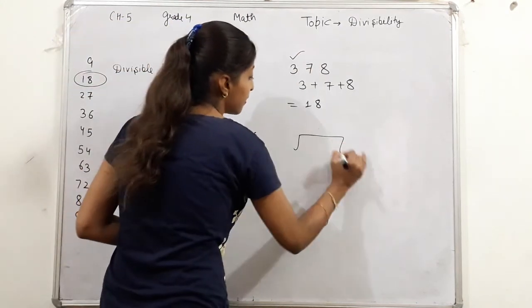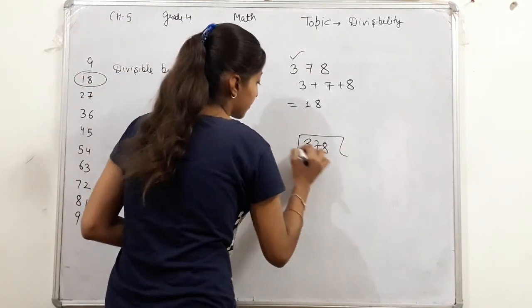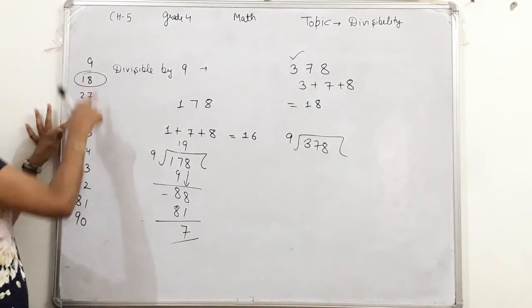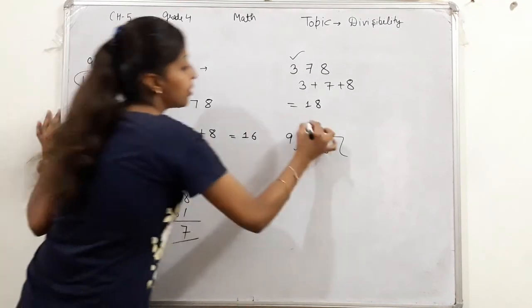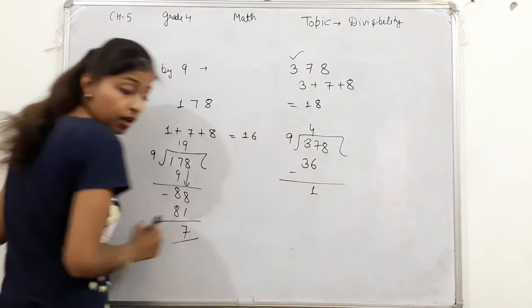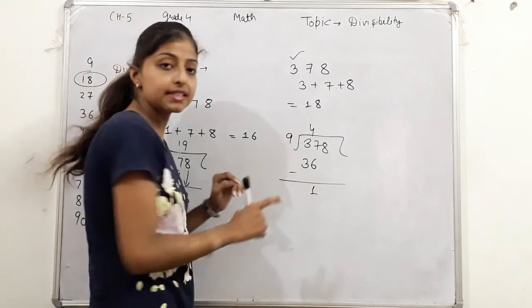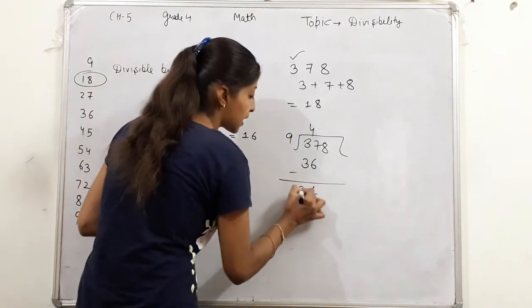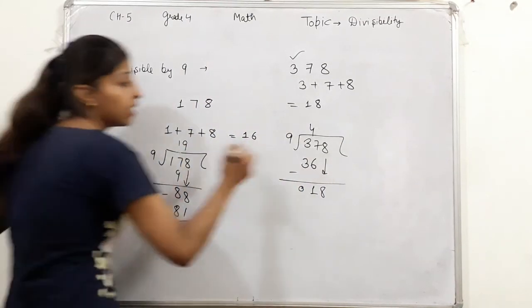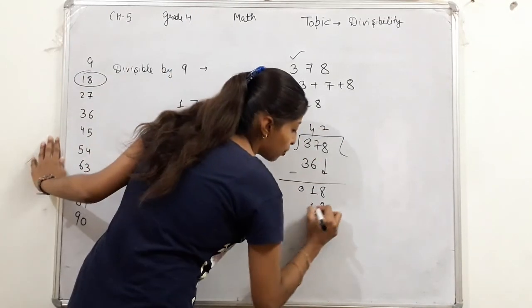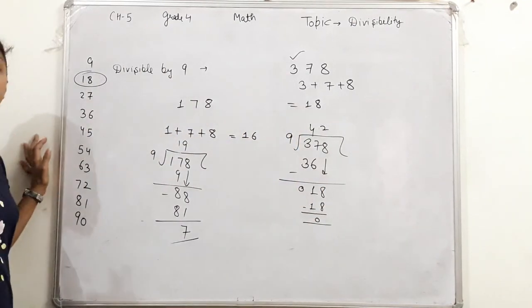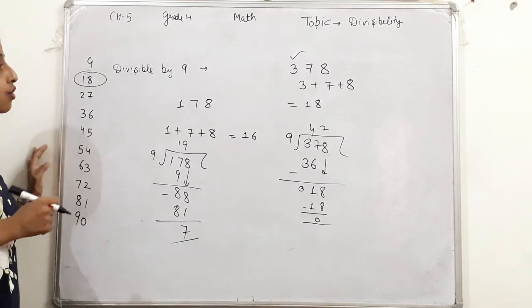378 divided by 9. 37, so this goes to 4: 1, 2, 3, 4. 9 fours are 36, minus. What comes below? 1. 7 minus 6 gives 1, 3 minus 3 gives 0. Bring down 8. 9 twos are 18, check it. Minus, 0. This is your answer. This number completely divides by 9.